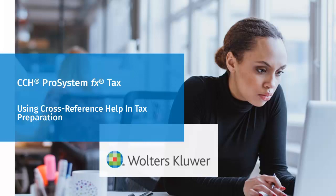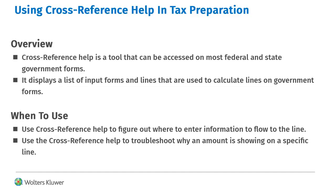Welcome to the video to learn how to use Cross Reference Help in CCH Pro System FX Tax. Cross Reference Help is a tool that is accessed while on most federal and state government forms. It shows you the lines of the government form and lists the input forms and fields used to calculate each line. This tool is most commonly used to find out where to enter information to flow to a specific line on the government form, or to help troubleshoot how a line is being calculated.